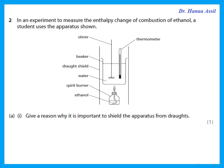Question 2 says: in an experiment to measure the enthalpy change of combustion of ethanol, a student uses an apparatus with water in a beaker, a thermometer and a stirrer, heated by a spirit burner containing ethanol, with a shield around the apparatus. The reason it's important to shield the apparatus is so that there is less loss of heat to the surroundings.